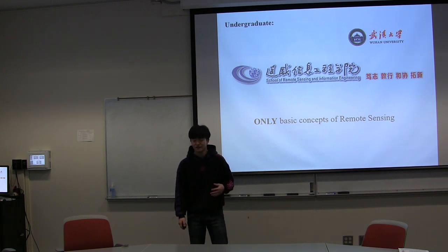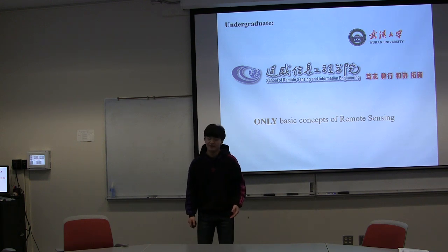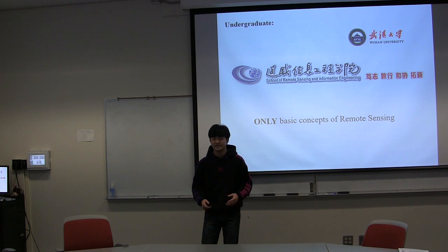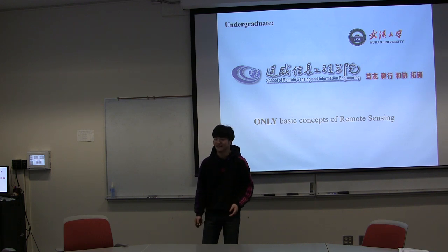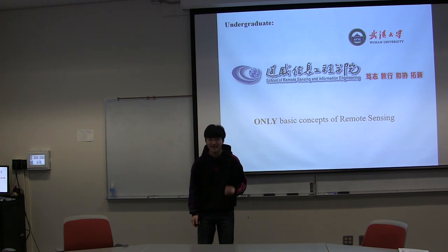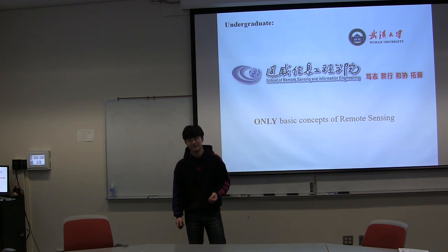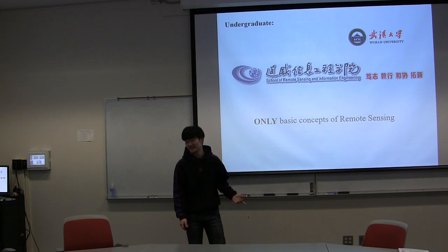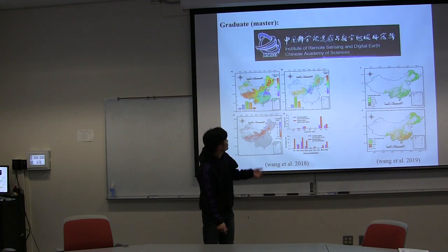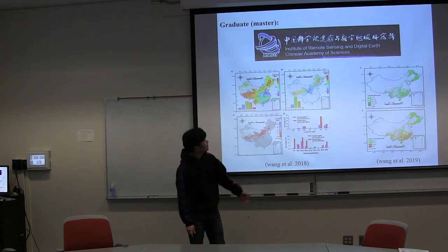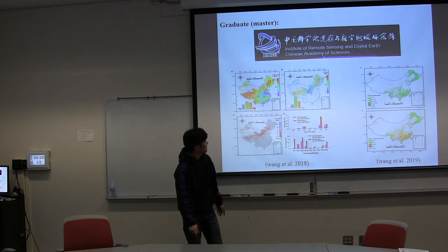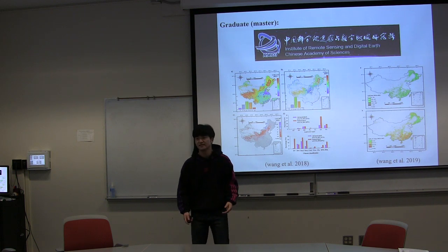But until I graduated, I finally realized that I don't like photogrammetry at all. If I had a chance, I would have selected remote sensing. So, I went to the Institute of Remote Sensing and Digital Earth, Chinese Academy of Sciences.